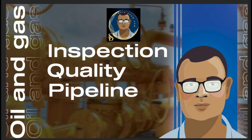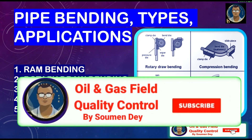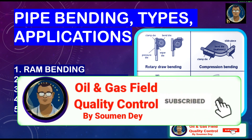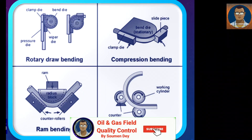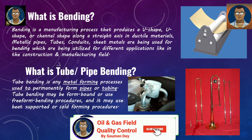Hello viewers, today I came with a mechanical process which is called bending. Bending is a manufacturing process that produces a V-shape, U-shape, or channel shape along a straight axis in ductile materials. Metallic pipes, tubes, conduits, and sheet metals are being used for bending, which are utilized for different applications like construction and manufacturing fields.